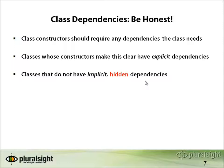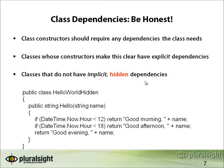Here's a class called HelloWorldHidden that has a hidden dependency on the system clock. It'll work a certain way in the morning, another way in the afternoon, and another way in the evening, but there's no way for you to alter that dependency. In this case, it's violating the Open-Closed Principle in that if you wanted to change the logic for times of day, or be able to test it so you can run all three paths through the method without having to run your tests at different times of day, you would have a hard time doing so.